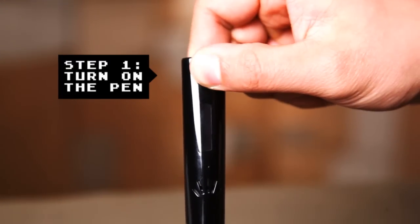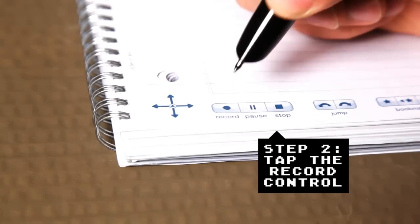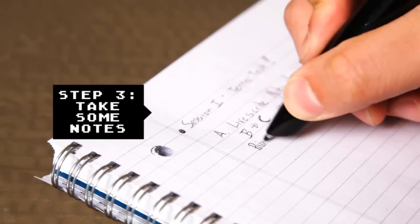It's rather simple to figure out. Just a single power button and tap on the controls on the paper, and then you're in business.